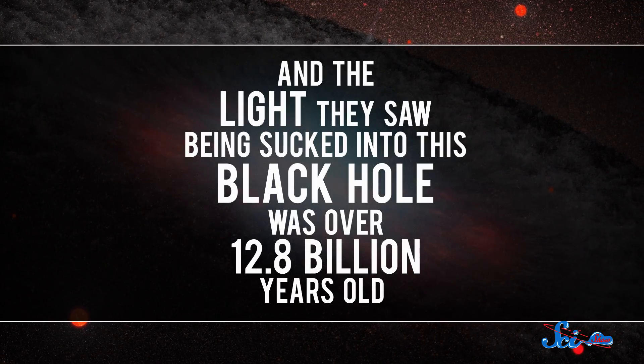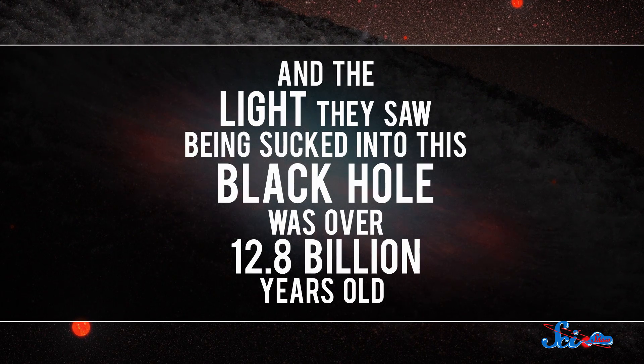By measuring the shift in wavelengths of light coming from around this black hole, the researchers could tell how fast it's moving away from us, and from there figure out how old it is. And the light they saw being sucked into this black hole was over 12.8 billion years old. Other black holes we've found around this age are at most 3 billion times as massive as the Sun. So this new thing does not make sense.